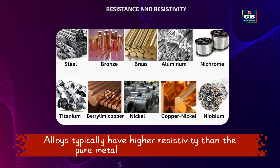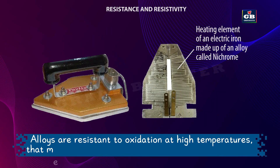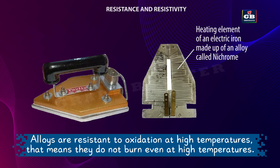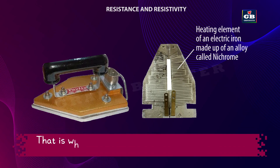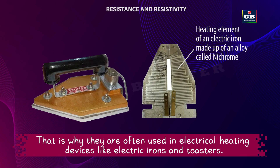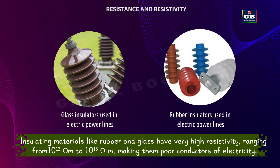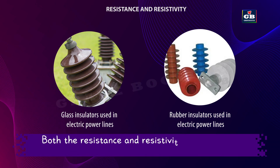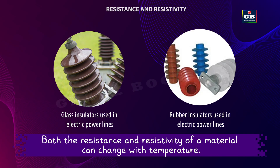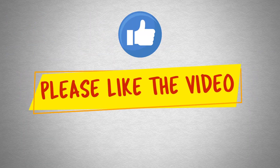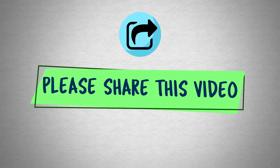Alloys generally have higher resistivity than the pure metals they are made from. If alloys have more resistivity, then why are they still used in electrical devices? Alloys are resistant to oxidation at high temperatures — they do not burn even at high temperatures. That is why they are often used in electrical heating devices like electric irons and toasters. Insulating materials like rubber and glass have very high resistivity, ranging from 10 to the power of 12 ohm meter to 10 to the power of 18 ohm meter, making them poor conductors of electricity. Both the resistance and resistivity of a material can change with temperature.